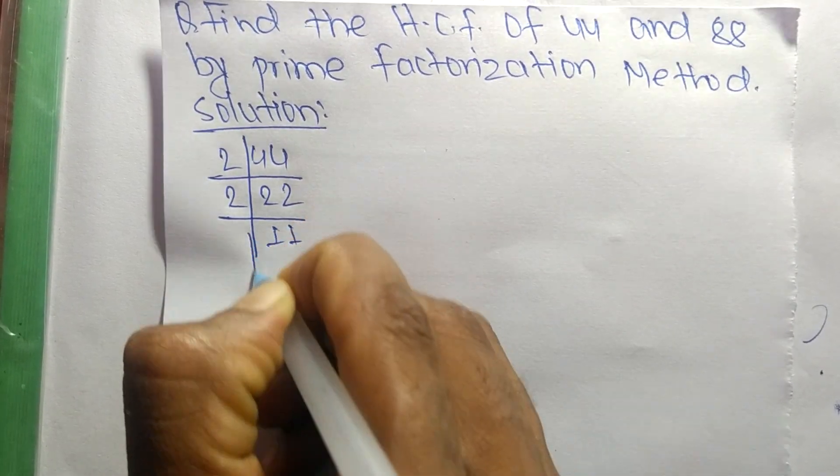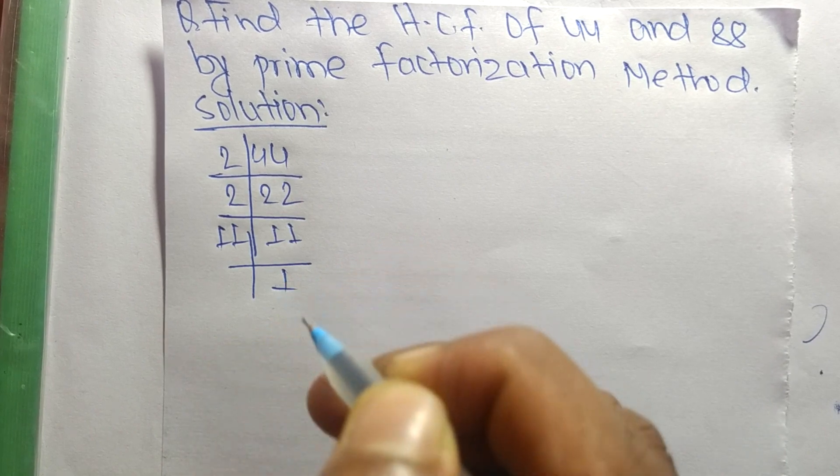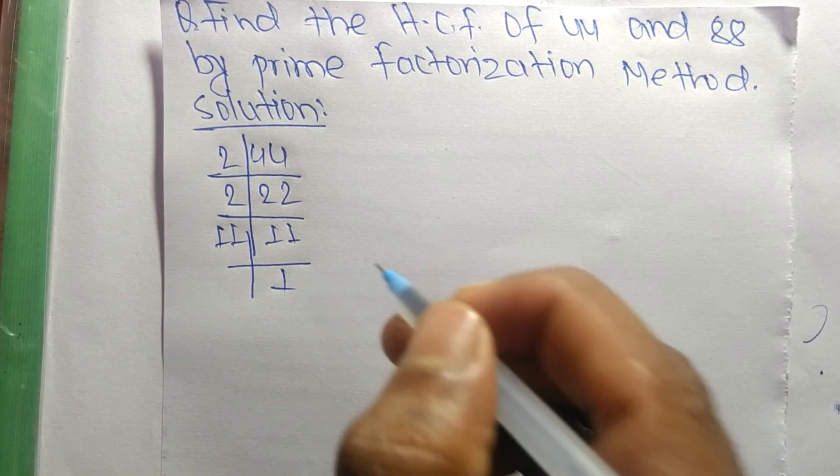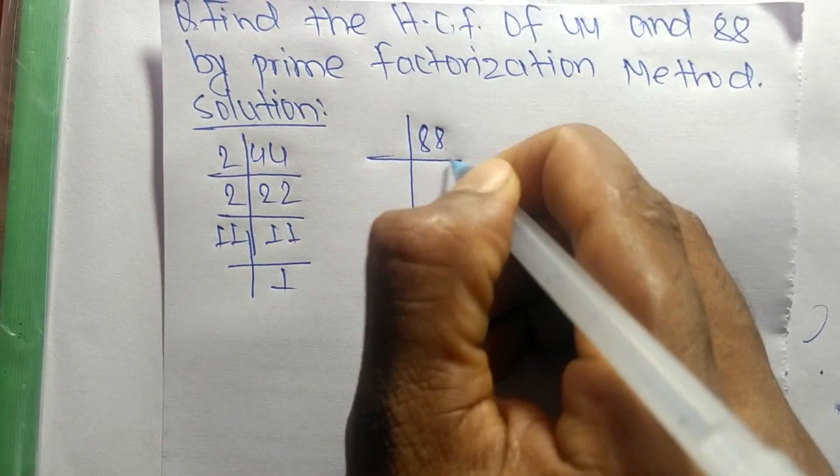Then 11 times 1 equals 11. Now the prime factors of 88 are: 2 times 44 equals 88.